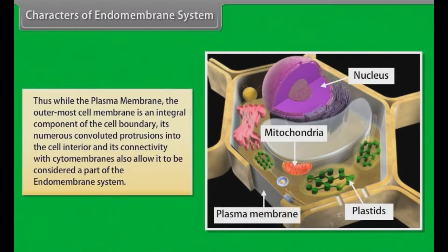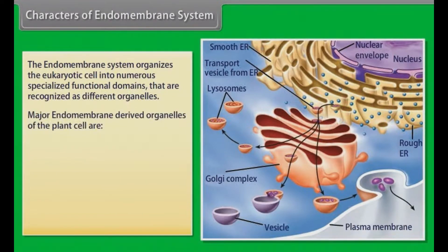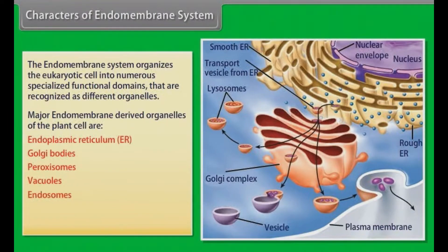While the plasma membrane, the outermost cell membrane, is an integral component of the cell boundary, its numerous convoluted protrusions into the cell interior and its connectivity with the cytomembranes also allow it to be considered a part of the endomembrane system. Major endomembrane derived organelles of the plant cell are endoplasmic reticulum, Golgi bodies, peroxisomes, vacuoles, endosomes, autophagosomes, and outer nuclear envelope.